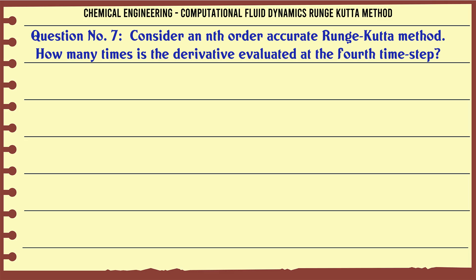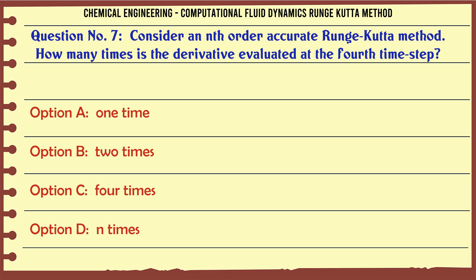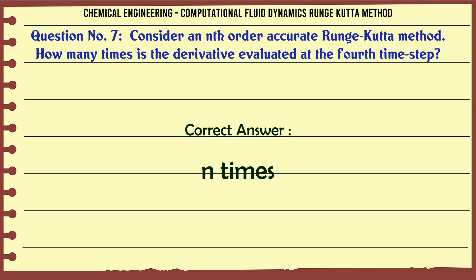Consider an nth-order accurate Runge-Kutta method. How many times is the derivative evaluated at the 4th time step? A: one time. B: two times. C: four times. D: N times. The correct answer is: N times.